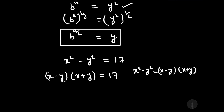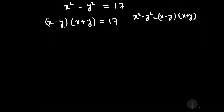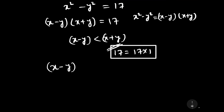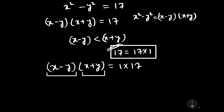We know that the difference of two numbers is smaller than the sum of the two numbers. It means x minus y is a smaller number than x plus y. The factor of 17 can be written as 17 times 1. Therefore we can put x plus y equal to 17 and x minus y equal to 1.